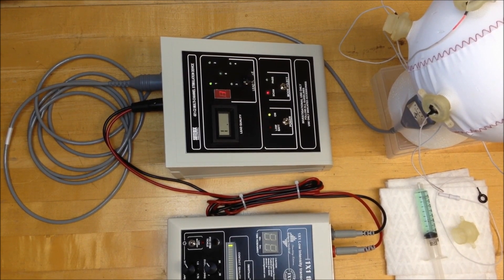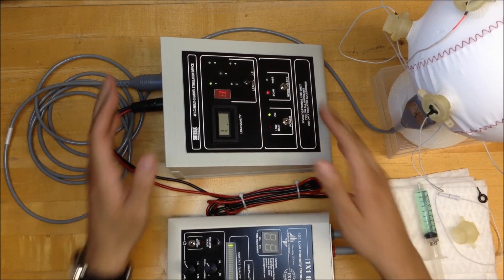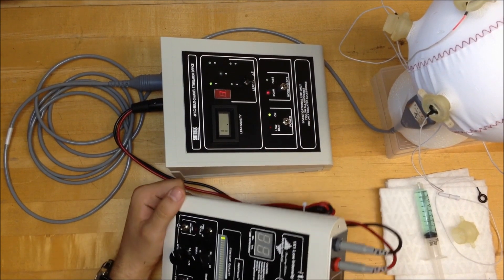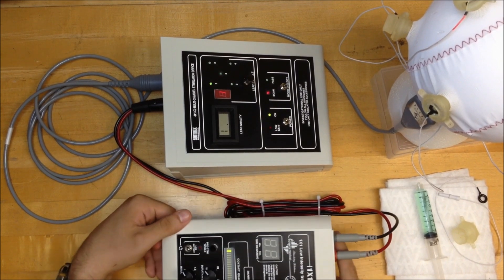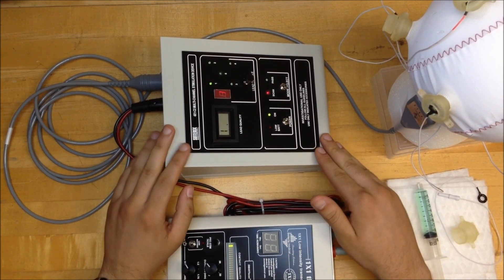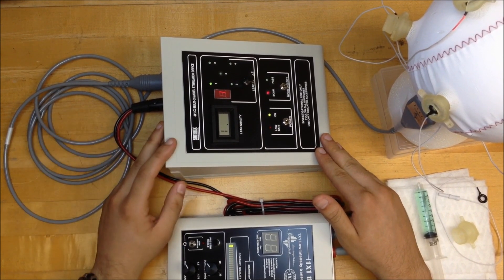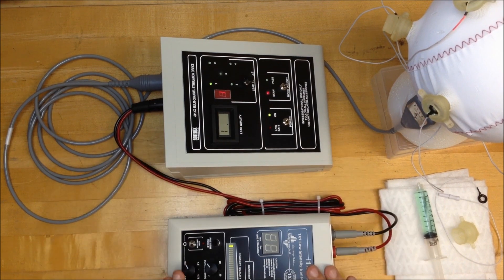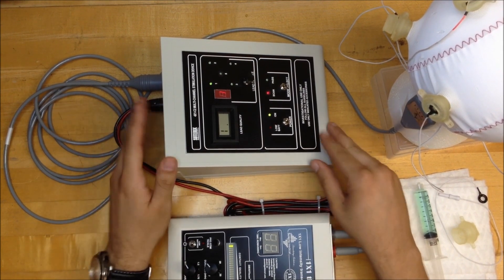The current setup before you is the Soterix Medical 4x1 unit connected to the two-channel TDCS stimulator, also provided by Soterix Medical. The 4x1 unit is not a current generator; however, it functions as a passive splitter that cleverly splits the current from the two-channel stimulator into a five-channel stimulation device.